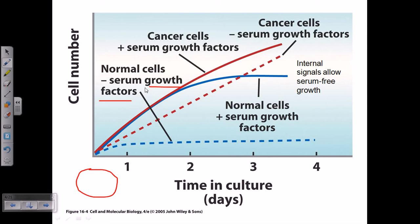For normal cells, if we add growth factors, you can see it enhances the proliferation and division of the cells pretty rapidly. It takes off with a log value, then kind of balances and stabilizes, but the number of cells found is much, much higher compared to when no growth factor is added. The serum growth factor provides the necessary proteins or chemicals which enhance the growth of those cells.